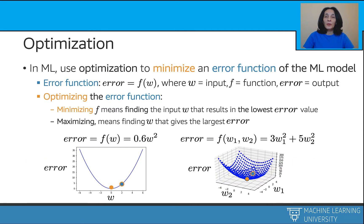Let's consider a machine learning model that makes some error. That error depends on the prediction of the model, which therefore depends on the machine learning model's parameters. Let's call them collectively W, like in weight. We can then think of the machine learning model's error as a function of W — let's call it F of W.